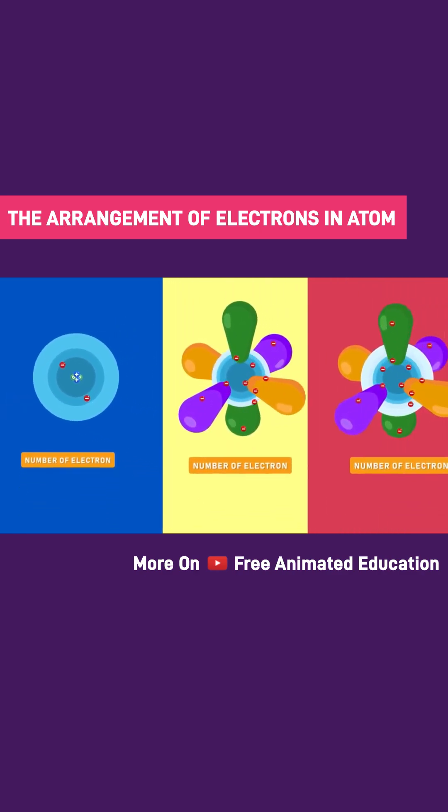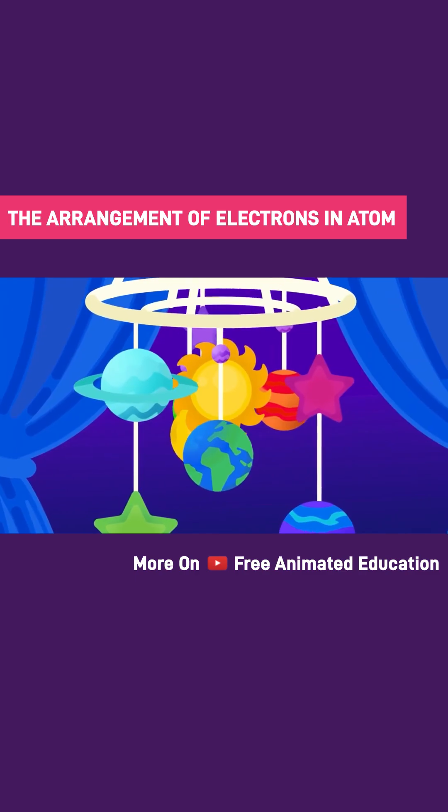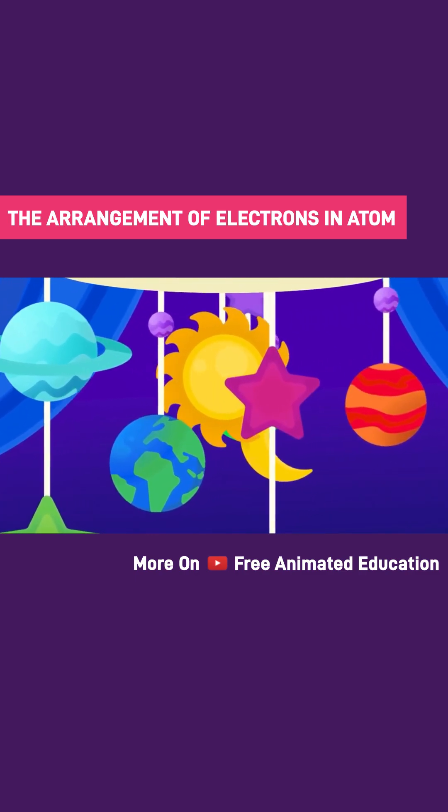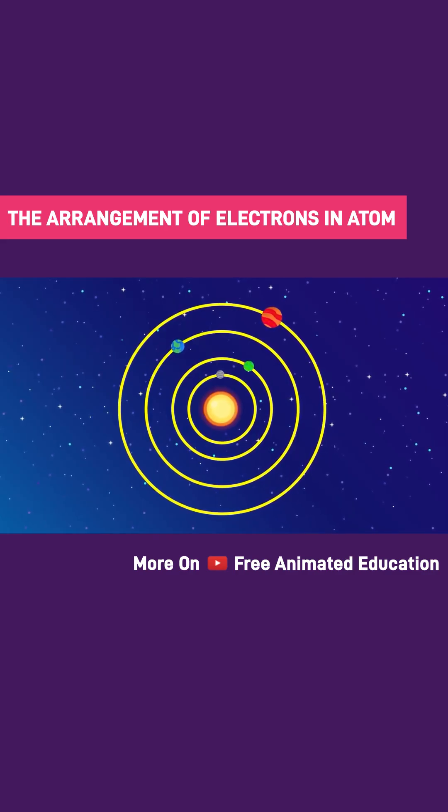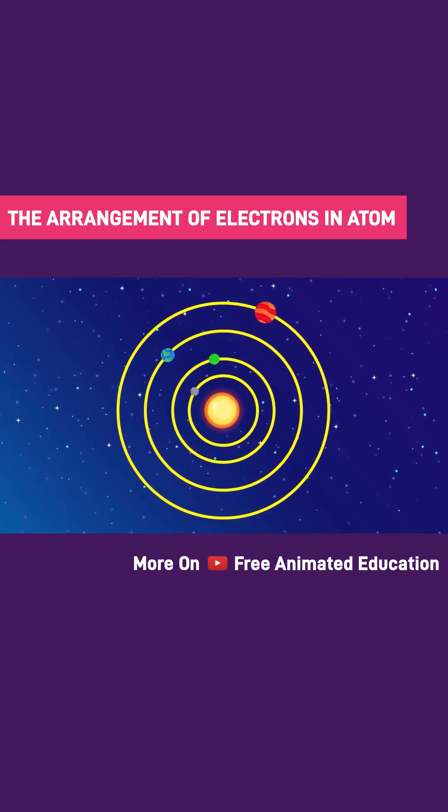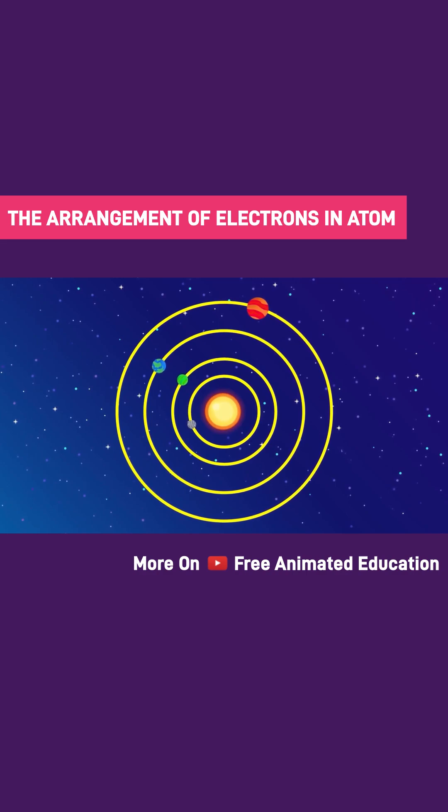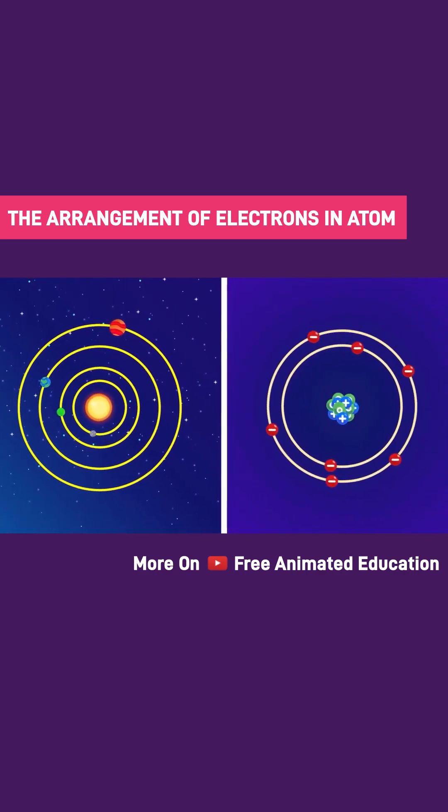The shape of orbitals varies with the number of electrons, but to help understand how electrons are arranged in an atom, we can picture our solar system. We can think of electrons as planets that orbit the sun. Just as planets are fixed in their designated orbits and do not collide with any planet, electrons too are fixed in their shells.